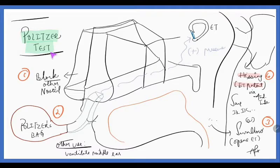Next is Politizer test. Politizer test is basically the same principle of increasing positive pressure in the nasopharynx but a little different by adding a Politizer bag. That side of Eustachian tube being tested is selected and the opposite side nostril is closed, blocked.